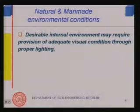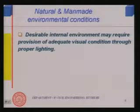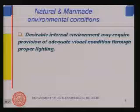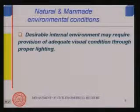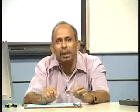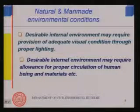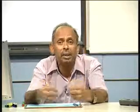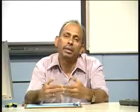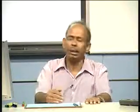Desirable internal environment may also require good lighting and visual comfort. For writing or reading, a particular illumination level in lux is required; for detailed work like watch repairing, very high visual comfort is needed. Circulation is another important issue — the building space should provide adequate space for movement of people, material, or equipment.